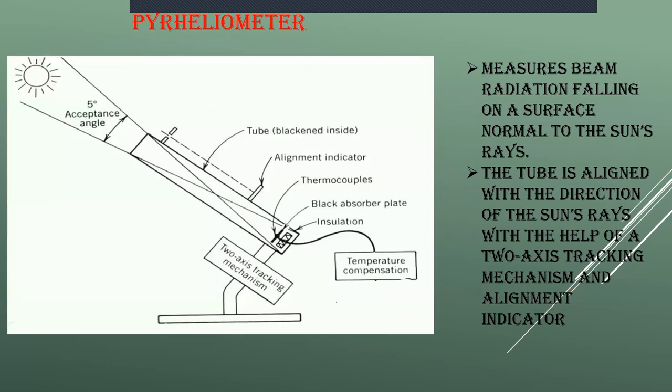Now when you are seeing about pyrheliometer, this is an instrument which is measuring the beam radiation that is falling on the surface from the sun's rays. In pyrometer, we had a black absorption plate where it absorbed the solar radiation. There was a thermopile and cold guard fixed behind the thermopile. Here, the black absorber plate with the hot junctions of the thermopile is located at the base of the collimating tube.